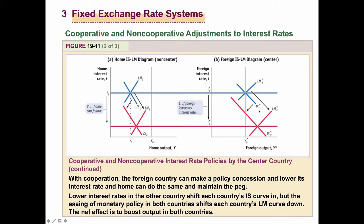The central country first lowers its interest rate by increasing money supply, so the LM curve shifts from LM* 1 to LM* 2. When the foreign country interest rate falls, it creates appreciation pressure on the home currency, which would worsen the home country's trade balance — so the IS curve shifts to the left. Under the fixed exchange rate system, actual appreciation of the home currency doesn't happen, but in principle, if there were no exchange rate restriction, the trade balance would move in a negative direction, so the IS curve must shift.